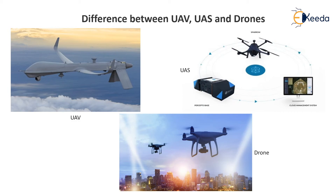In the case of autonomous drones, communication management software coordinates missions and pilots the aircraft instead of a human. Because an autonomous drone is piloted by software instead of a human, it is a part of a UAS by definition, as it requires a complete system to operate.